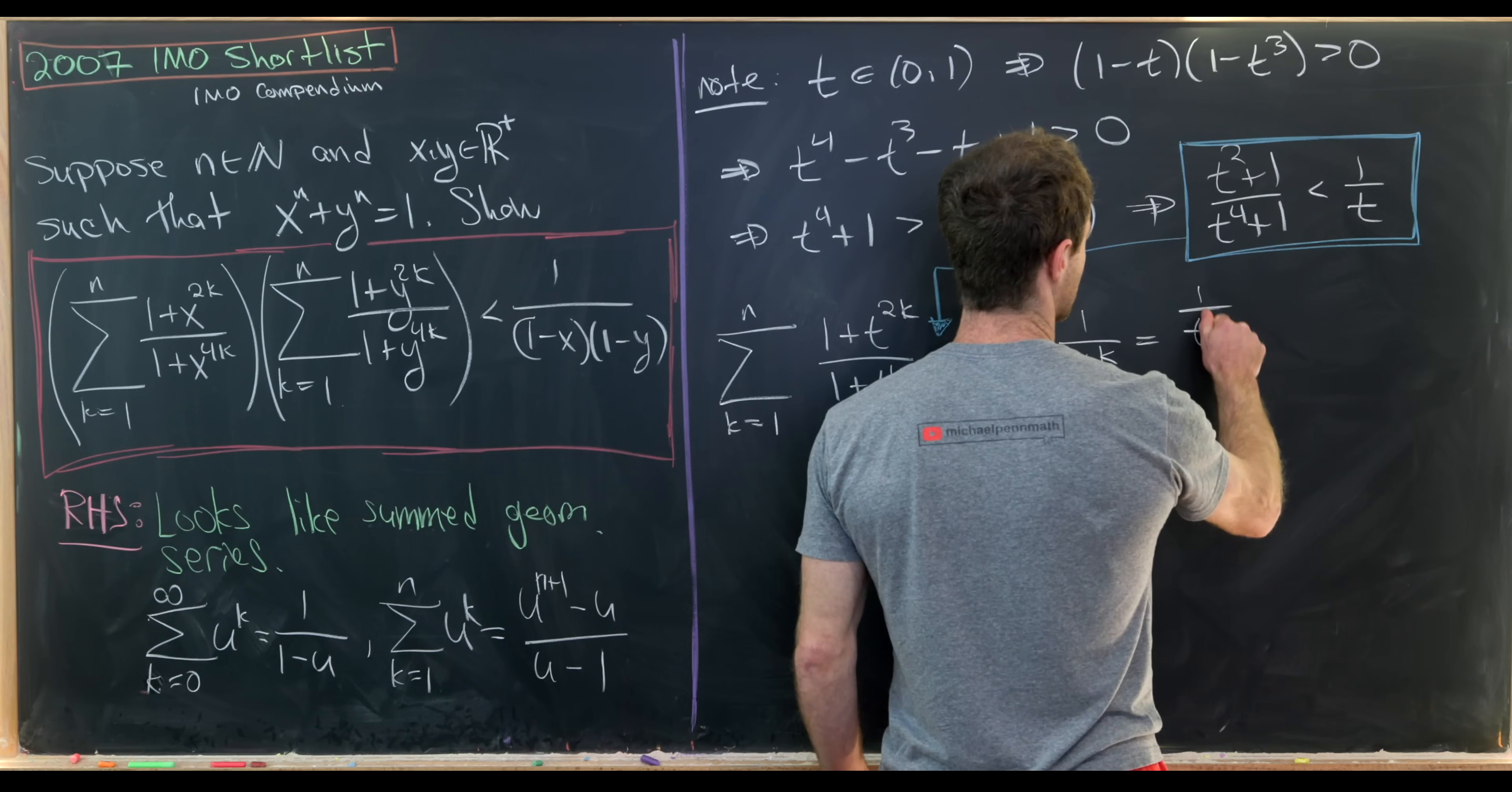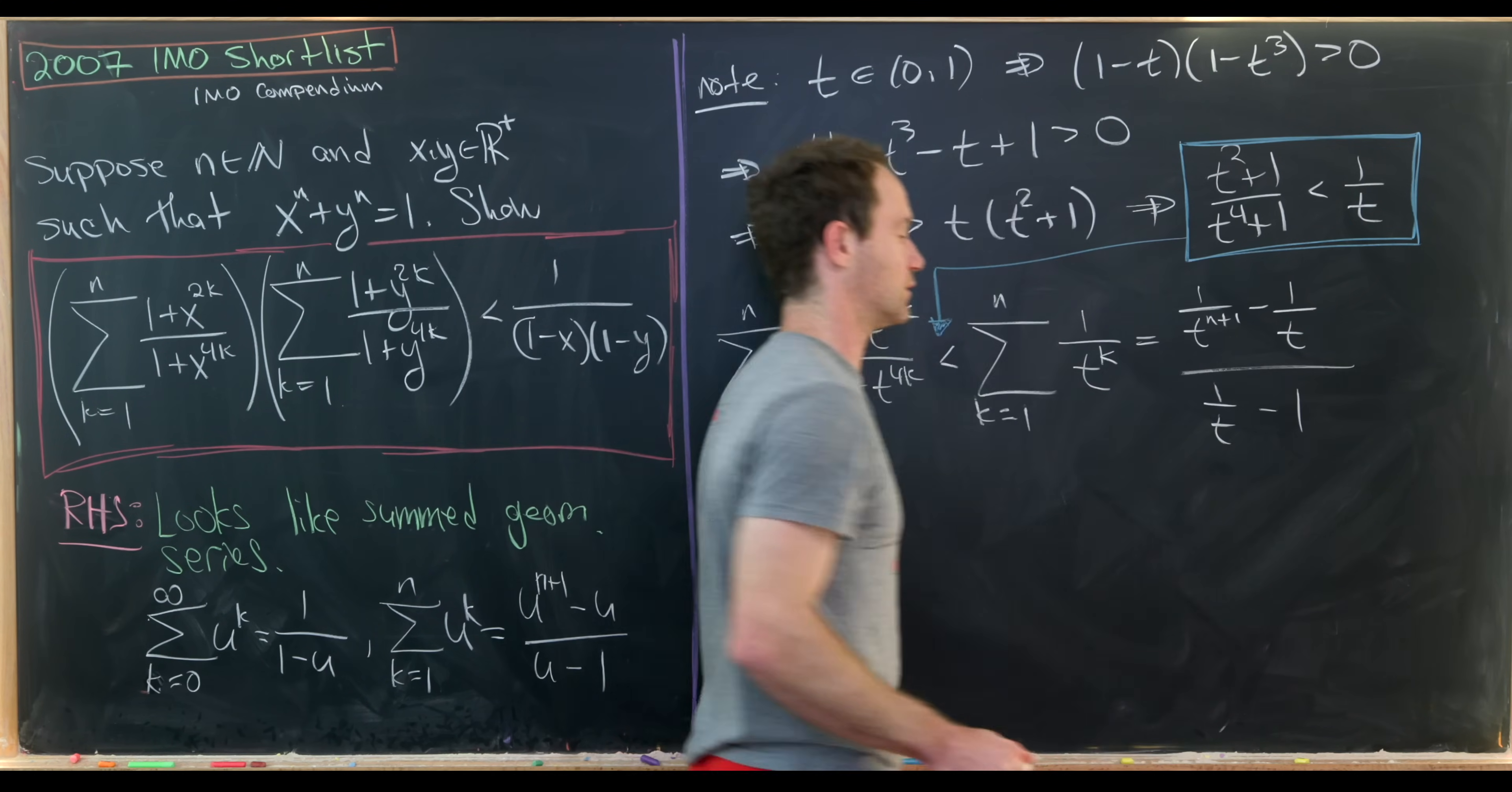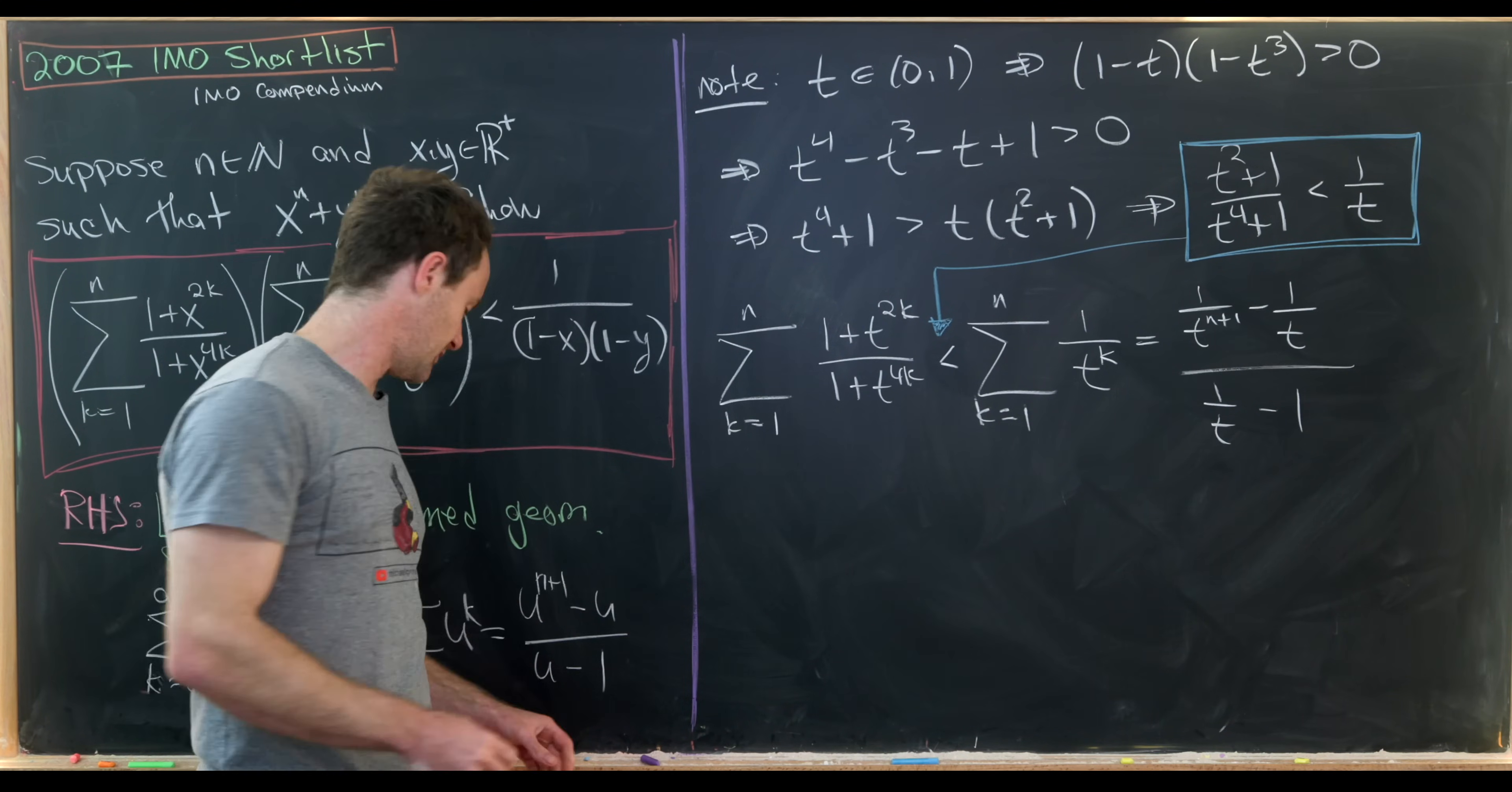That'll leave us with (1 over t to the n plus 1 minus 1 over t) over (1 over t minus 1). So something like that. But that's a little bit difficult to look at.